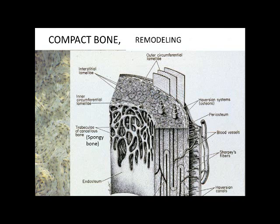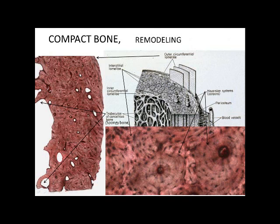Sometimes you have bone being laid down appositionally from the outside — those cells differentiate to make bone cells, and we call these outer circumferential lamellae. On the inside you have inner circumferential lamellae, where bone develops from the mesenchymal cells in the endosteum. So bone grows in width from the endosteum and from the periosteum. The channels that form the osteon are made by osteoclasts, which create a hole that osteoblasts then fill in.